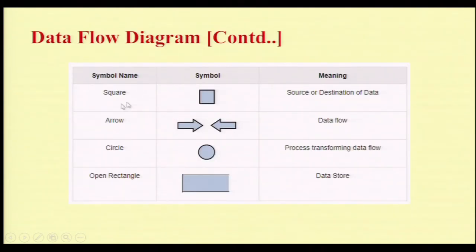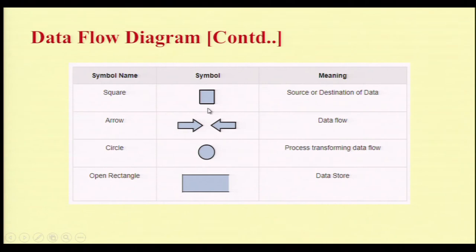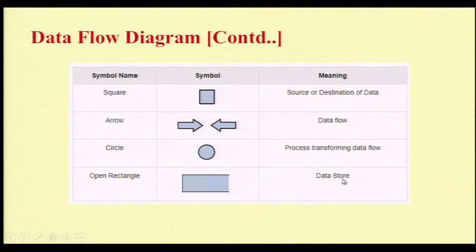In the DFD diagram, a square symbol acts as a source or destination of data. Arrows represent the data flow in upward, downward, forward, or reverse directions. A circle symbol determines the process transforming the data flow. An open rectangle represents a data store — a place where data is stored, acting as a database.